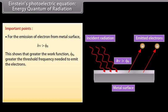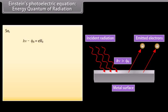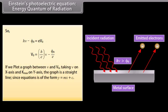Important points: For emission of an electron from the metal surface, h-nu must be greater than phi-zero. This shows that greater the work function phi-zero, greater the threshold frequency needed to emit the electron. The more the number of photons available, the more electrons absorb energy and the greater is the number of electrons emitted. Since K-max = eV-zero and K-max = h-nu minus phi-zero, we get: eV-zero = h-nu minus phi-zero, so V-zero = (h/e)nu minus phi-zero/e. A graph of nu versus V-zero is a straight line of the form y = mx + c, where the slope m = h/e is a universal constant.